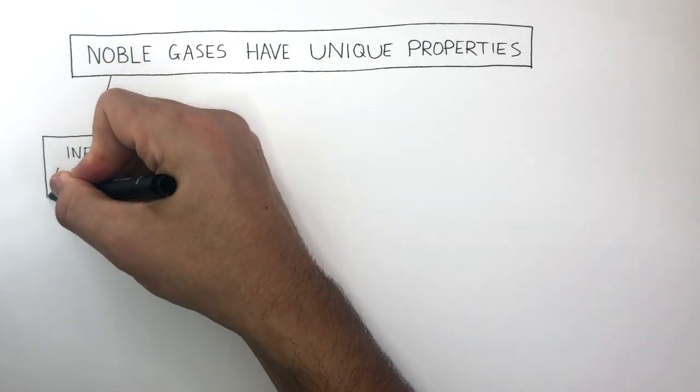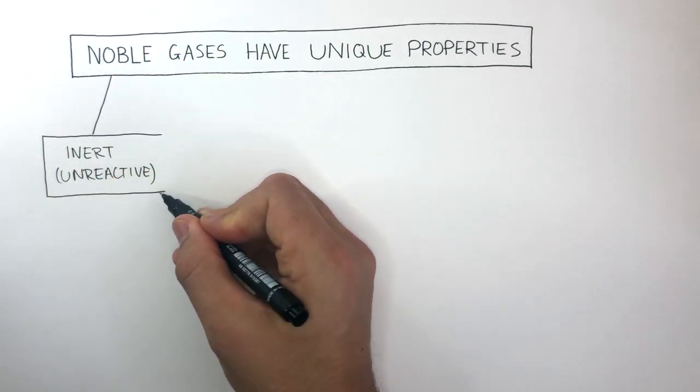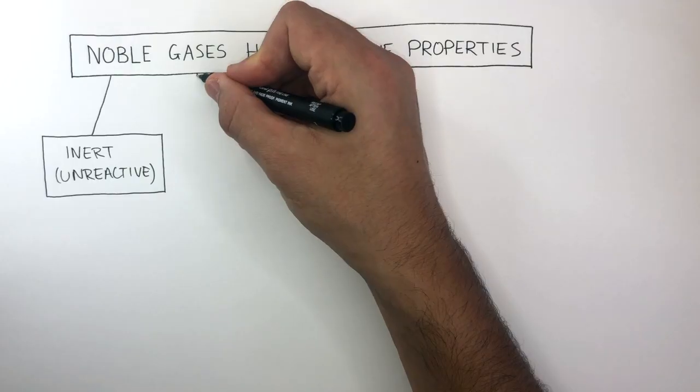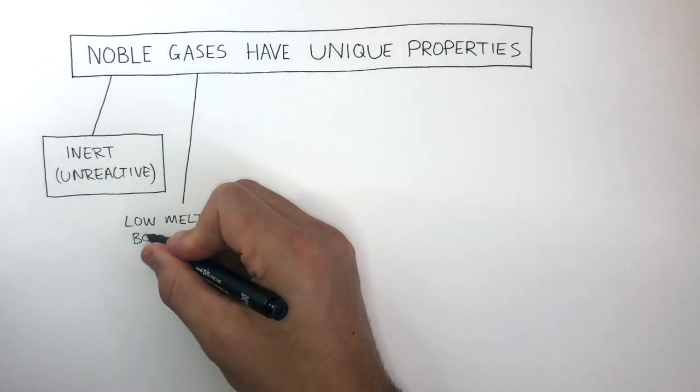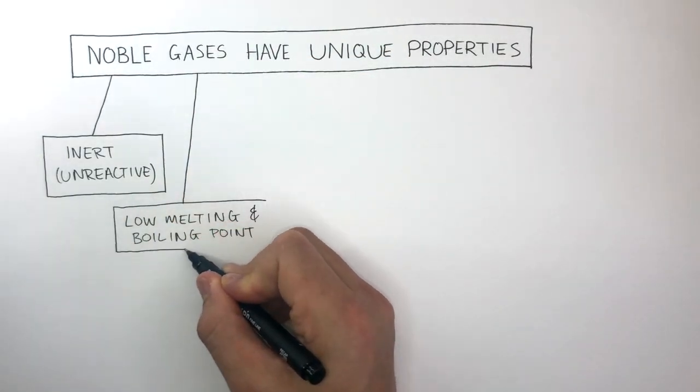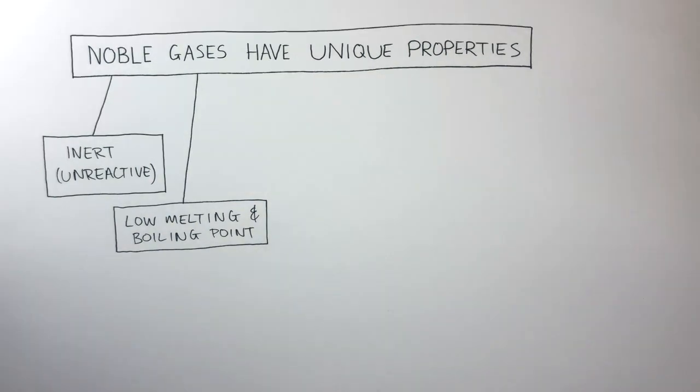This is because they have a full outer shell of electrons, so are stable atoms. They have low melting and boiling points due to the weak intermolecular forces between the atoms, therefore they exist as gases at room temperature.